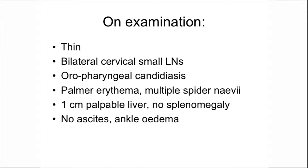He was examined. He was thin, had bilateral small cervical lymph nodes, oropharyngeal candidiasis — this was starting to ring alarm bells. He had palmar erythema and multiple spider naevi, a one centimetre palpable liver, but no splenomegaly, no ascites, and no ankle oedema.